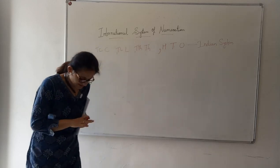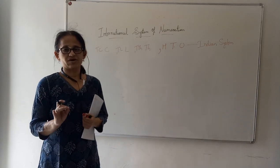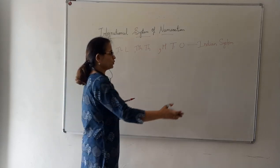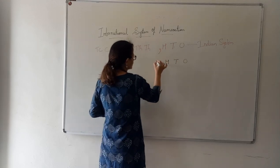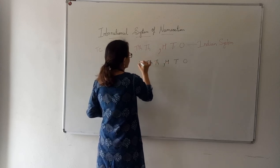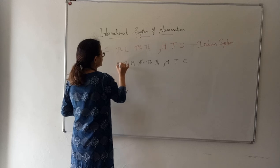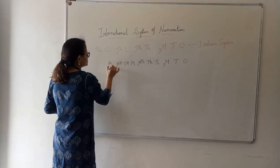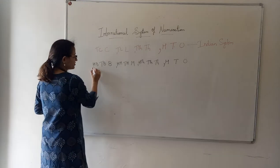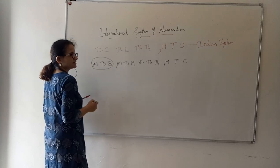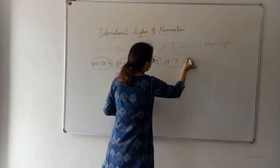In today's class, we will discuss about the international system of numeration. In the international system, every family has 3 members in it. We always start from the back: 1, 10, 100 | thousand, 10,000, 100,000 | million, 10 million, 100 million | billion, 10 billion, 100 billion, and so on. Every family — billions, millions, thousands, and the first family — has 3 members.